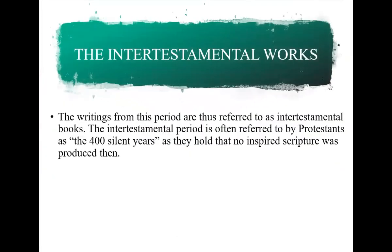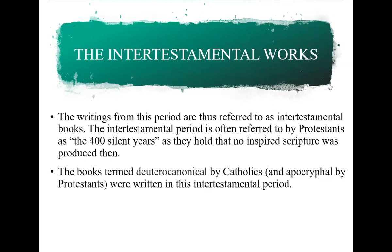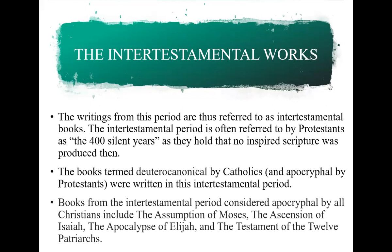We talk about that period as the 400 silent years, because no inspired Scripture was produced then — and when I say 'we,' I'm referring to Protestants. There are books produced then that all Christians, including Catholics and Orthodox, say are apocryphal — books like The Assumption of Moses, The Ascension of Isaiah, Apocalypse of Elijah, and The Testament of the Twelve Patriarchs. All Christians agree those are apocryphal.